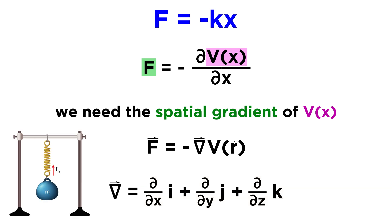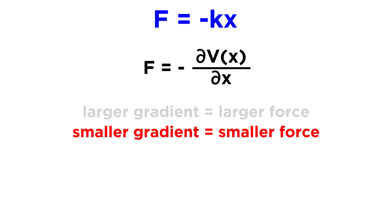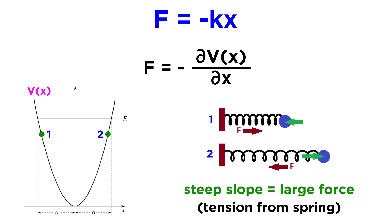Now we know that the gradient represented by this symbol is equal to the sum of these partial differentials. But if we are dealing with a one-dimensional problem, as we are here, we can just use d/dx. So, applied to the potential, that will look like this, where F equals the negative partial derivative of V of x with respect to x. Intuitively, this tells us that a force will be larger where the gradient, or essentially the slope of the potential, is larger, and where the gradient is smaller, the force will be smaller.